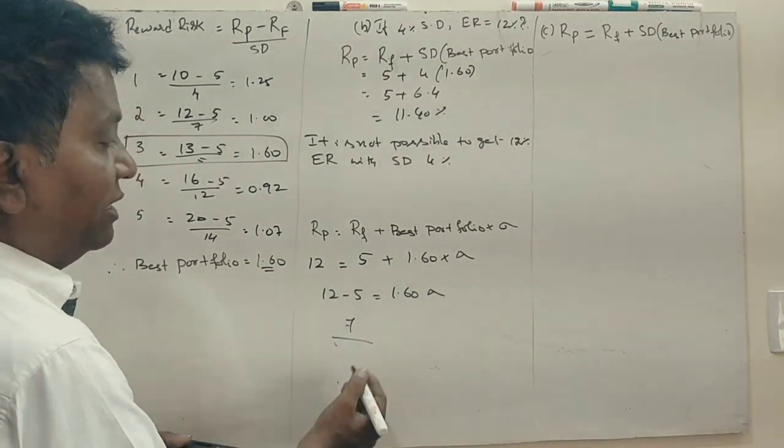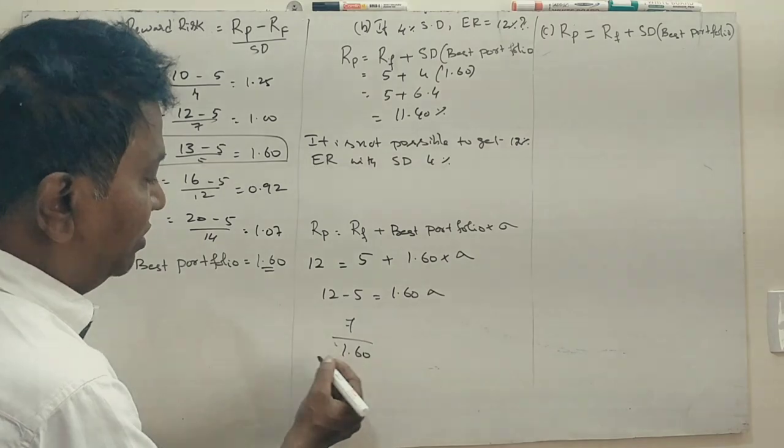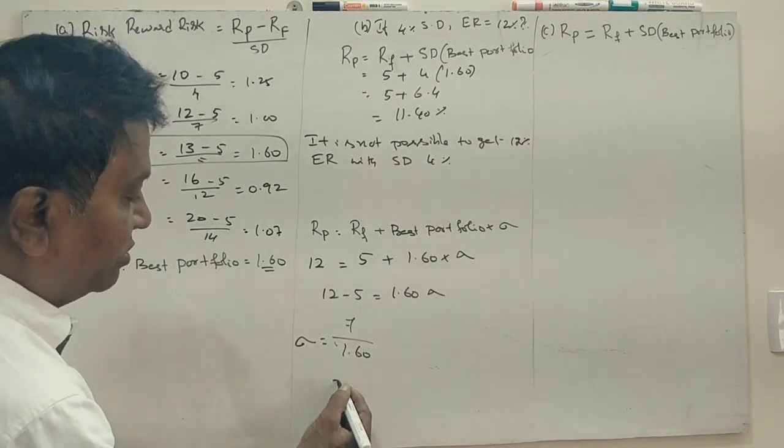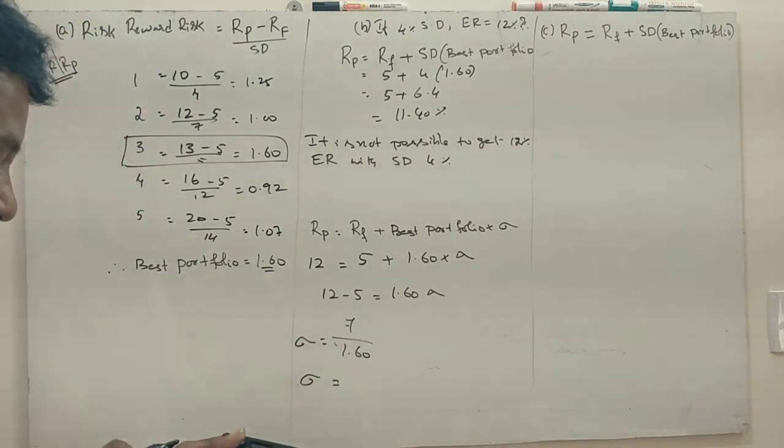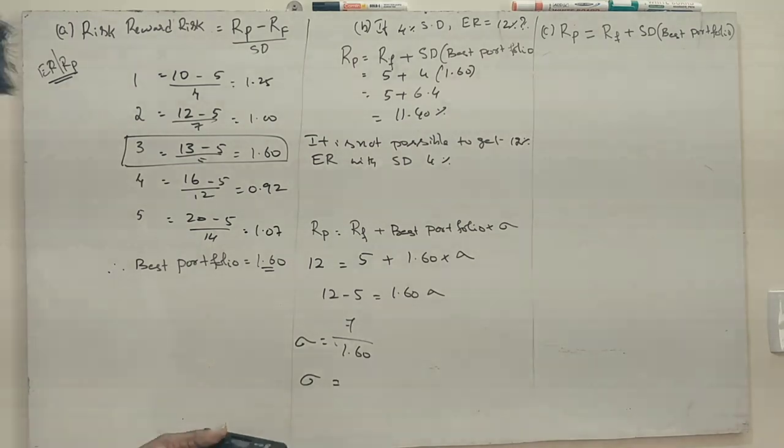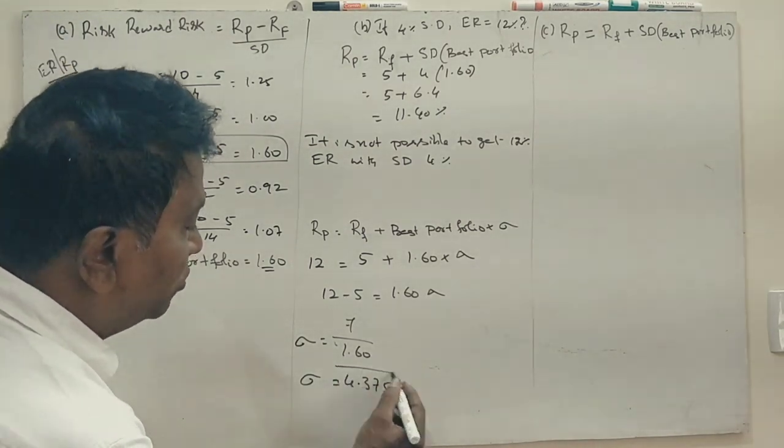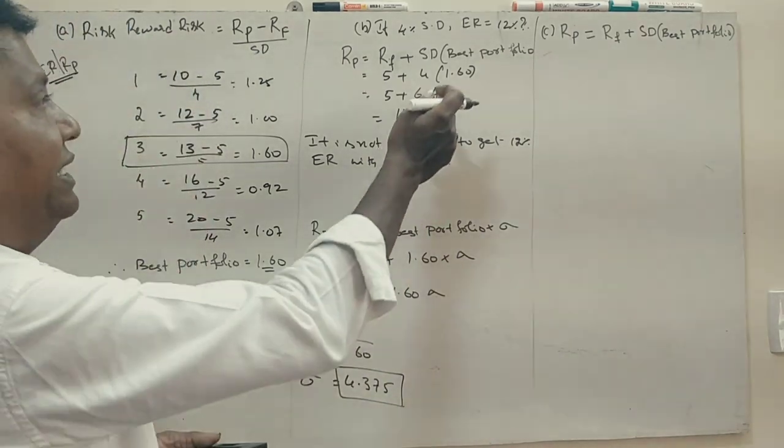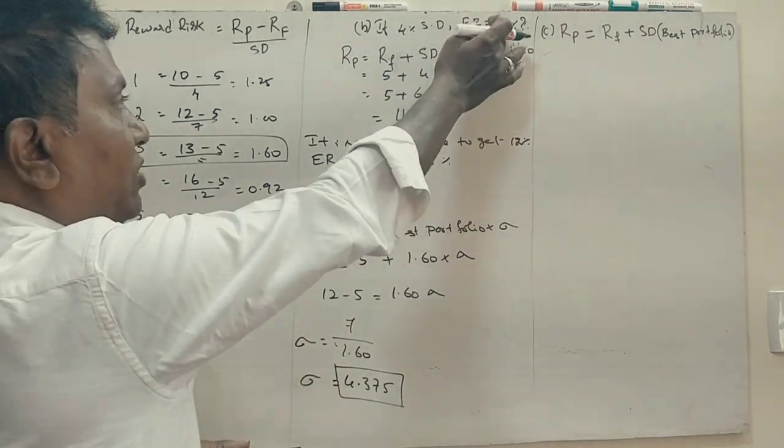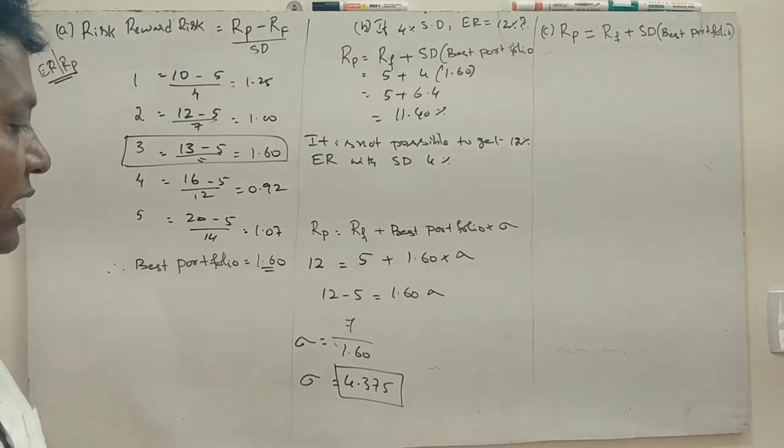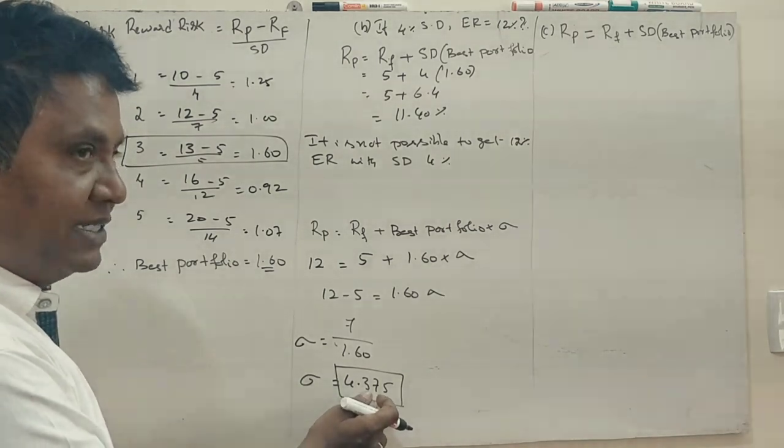7 divided by 1.60, so standard deviation is equal to 7 divided by 1.60, so 4.375. So you cannot get 4% standard deviation with 12% expected return.